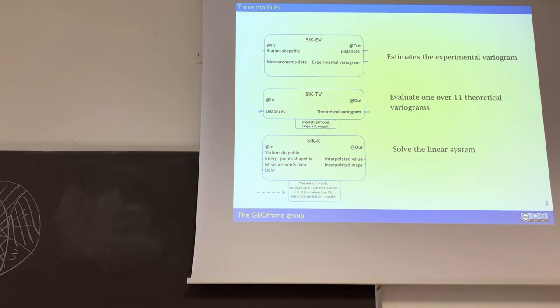This is the way we represent components. We have 6pb, which is the one that fits the experimental variable. It takes in input the position of the stations and the data which are measured, and gives in output the distances and the experimental variable.